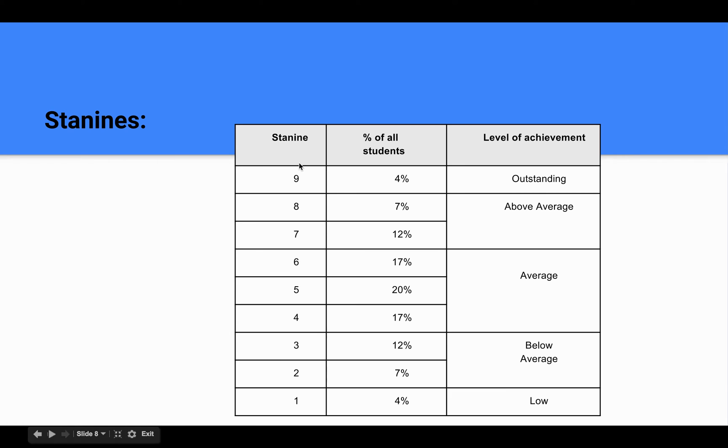STA9s show how an individual student's achievement relates to a representative sample of the same year level across New Zealand. Students whose test scores are close to the average score for their year level are given a STA9 in the 4 to 6 range.